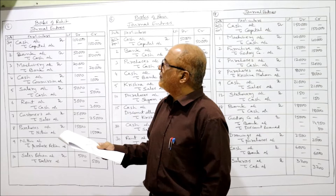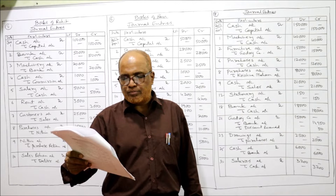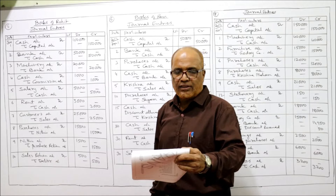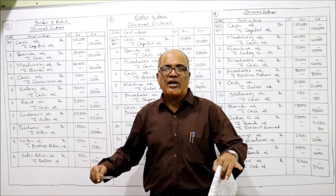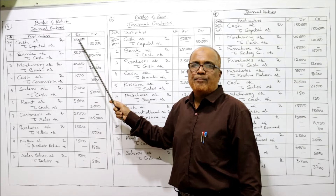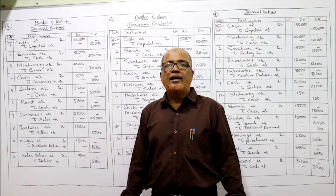Problem number five: journalize the following transactions in the books of Rohit. Transactions from January 1st to January 10th. January 1st: Rohit commenced business with rupees 1 lakh — cash account debit to capital 1 lakh. Being Rohit started the business with cash. Second: deposited into bank — cash is going out, cash is credited. Bank is the receiver, bank account debit to cash. Being cash deposited in bank. Next: purchased machinery, payment made by check — machinery account debit to bank. Being machinery purchased and check issued.